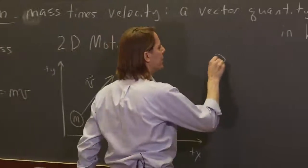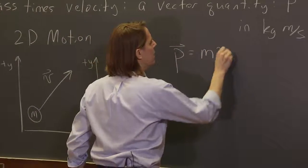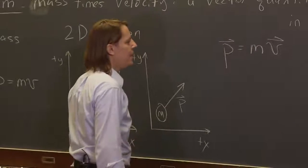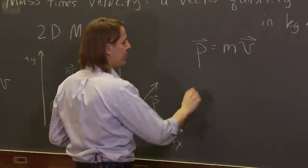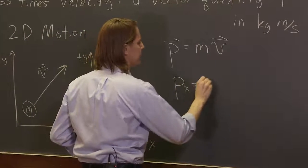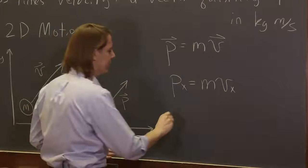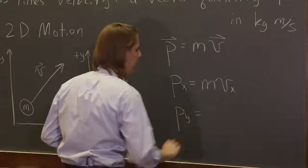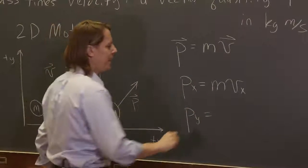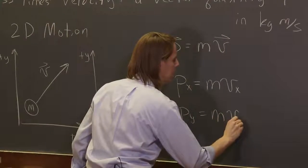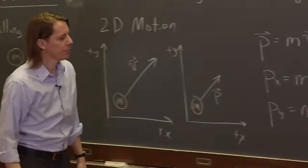So in terms of vectors, the vector p equals mv. But if you need to break it into components, the x component of the vector is just the mass times the x component of the velocity. And the y component of the vector momentum is just the mass times the y component of the velocity.